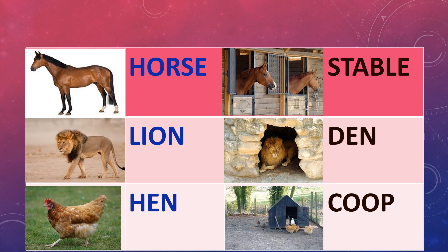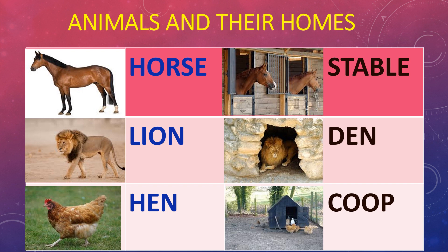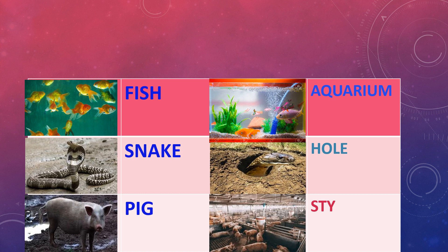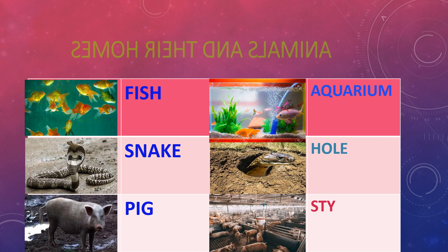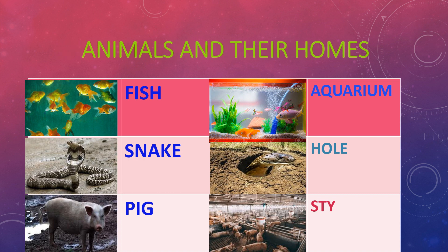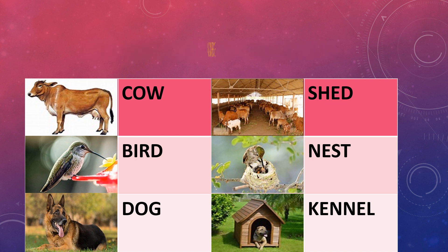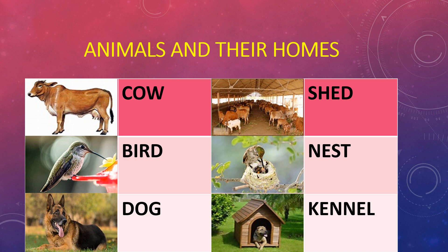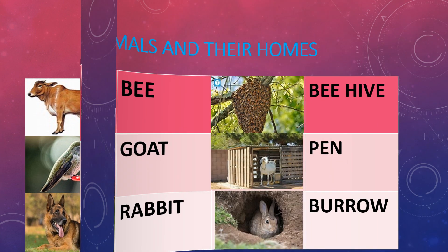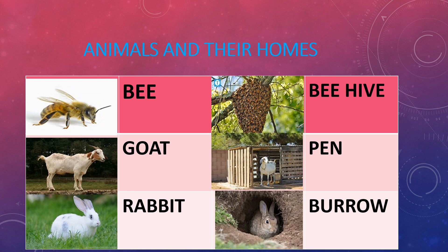Animals live in different types of homes. Animals and their homes: Horse lives in a stable. Lion lives in a den. Hen lives in a coop. Fish lives in an aquarium or water bodies. Snake lives in holes. Pig lives in a sty. Cows are kept in sheds. Birds make nests. Dogs live in kennels. Bees live in a beehive. Goats are kept in pens. Rabbits live in burrows.